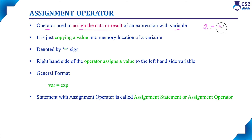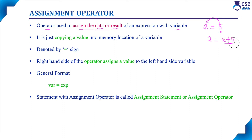For example, a = 5. Here, the right-hand side value is assigned to the left-hand side variable. We can also assign the result of an expression, such as a = a + 5, where the two values are added and the result is assigned to a. It is just copying the value into the memory location of a variable.